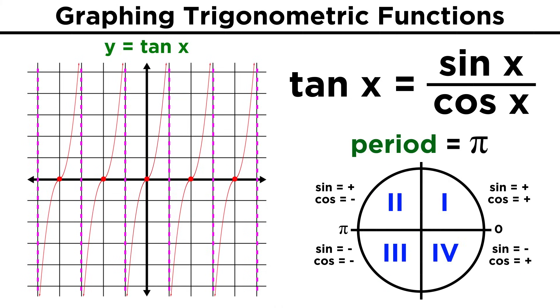Here is the graph for y equals tangent x. It has a period of pi, because tangent values from quadrant one, where sine and cosine are both positive, come back again in quadrant three, where sine and cosine are both negative. Likewise, tangent values in quadrant two, which are positive over negative, come back in quadrant four, where it's negative over positive.